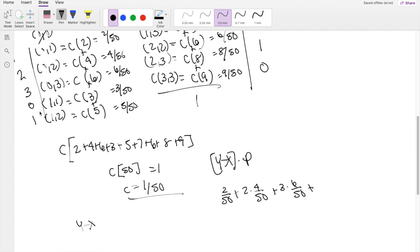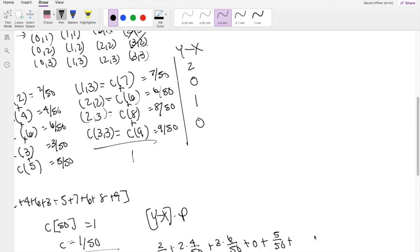This one is going to be just 0, because anything times 0 is just 0. Next one is 5 over 50. Moving on to the second column here. This is 2 times 7 over 50, plus this one's going to be 0 too.